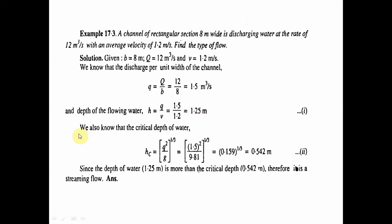We also know that the critical depth hc = (q²/g)^(1/3) = (1.5² / 9.81)^(1/3) = (0.2294)^(1/3) = 0.542 meters. Since the actual depth of water 1.25 meters is more than the critical depth of 0.542 meters, therefore it is streaming flow (subcritical flow).